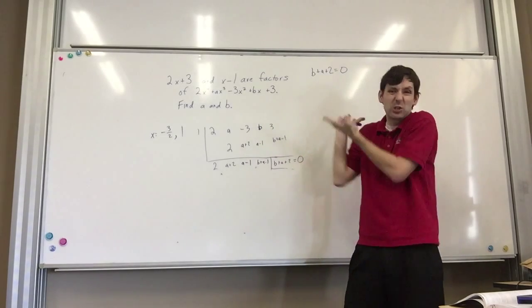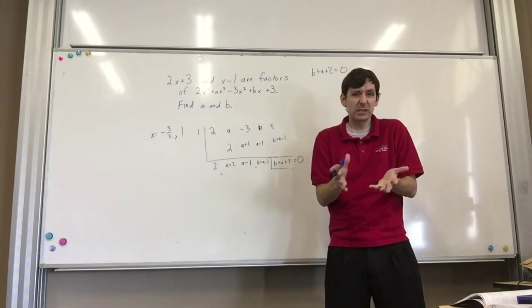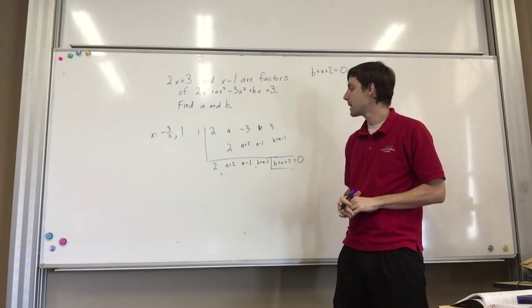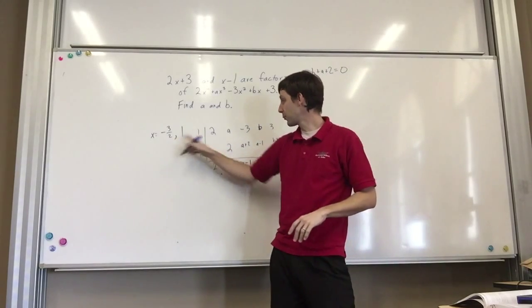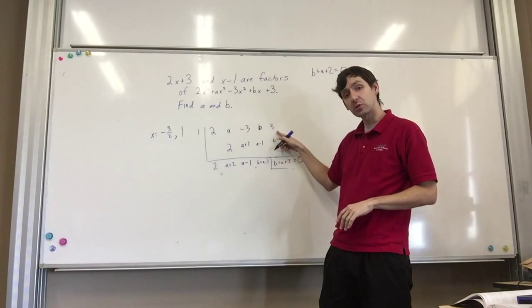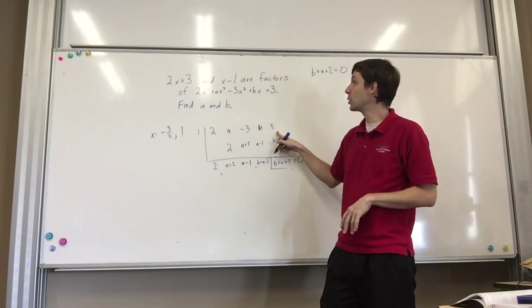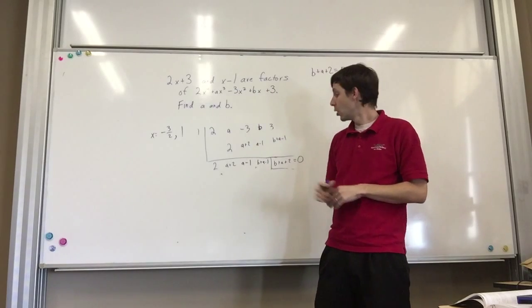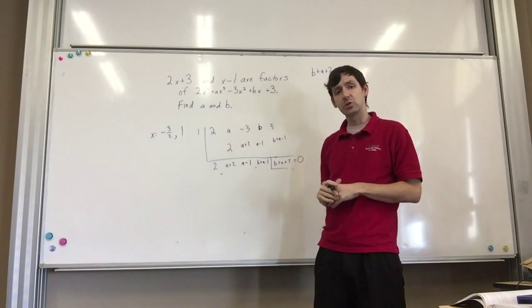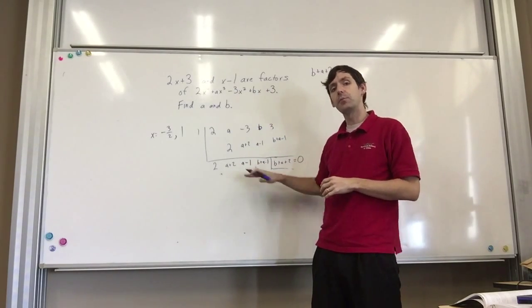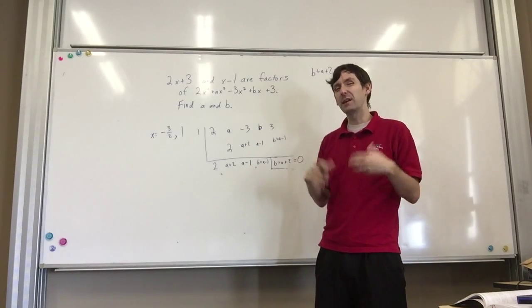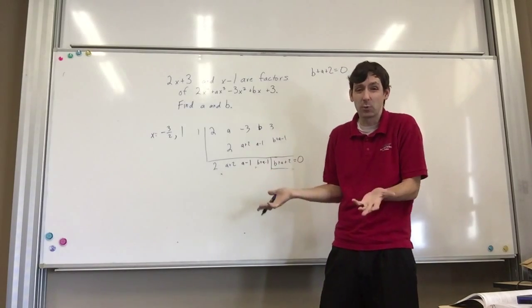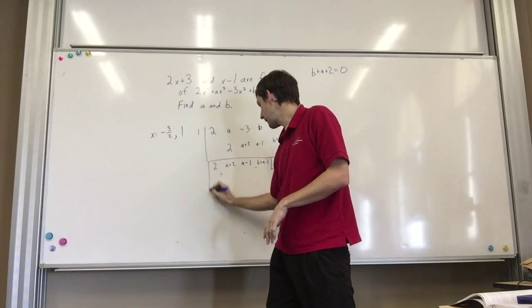So, we've got one formula right there, which would be b plus a plus 2 equals 0. But, of course, because there's two variables, I need two functions, and so, therefore, I need another one. You can either put the negative 3 halves into the original function right here, which is what you'd be doing if you were to just take the negative 3 halves and put it in for each of those x's. Or you can put it into the one that we've already got. Now, I'm going to put it into the one that we've already got because I know that eventually I'm going to want that function anyway.